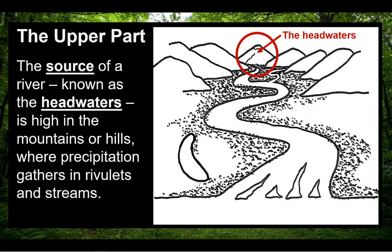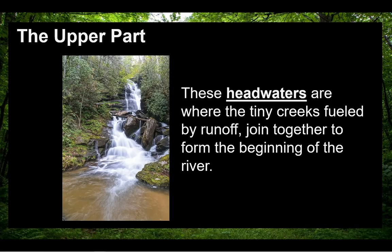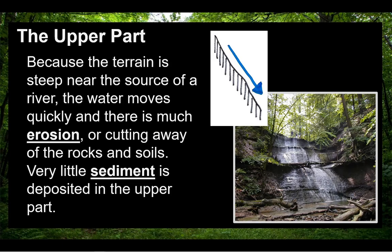The source of a river, known as the headwaters, is high in the mountains or hills where precipitation gathers in rivulets and streams. These headwaters are where the tiny creeks fueled by runoff join together to form the beginning of the river. Because the terrain is steep near the source of a river, the water moves quickly and there is much erosion, or cutting away of the rocks and soils. Very little sediment is deposited in the upper part.